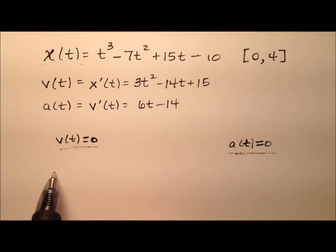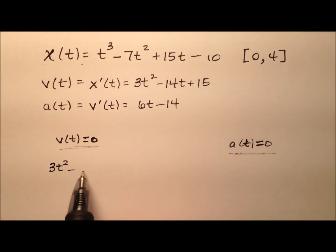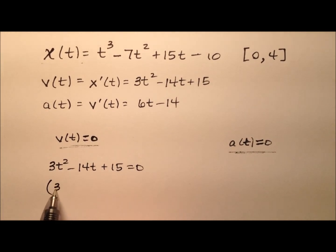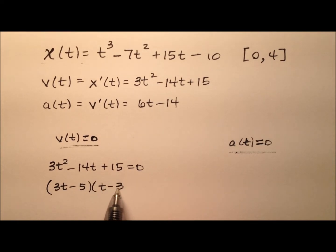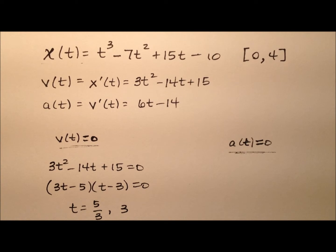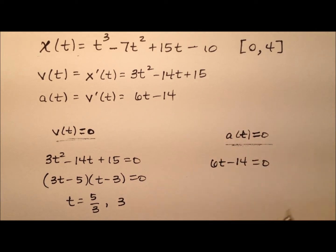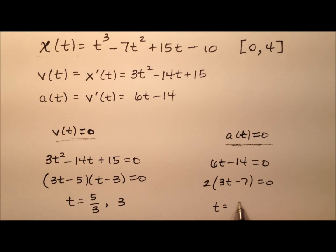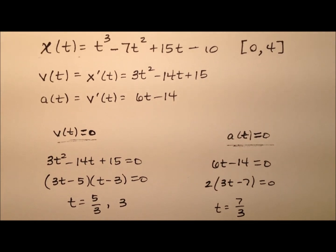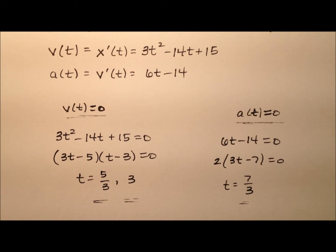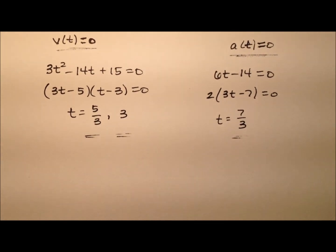Taking our velocity function 3t squared minus 14t plus 15 and setting it equal to 0, we can factor it as (3t minus 5)(t minus 3), giving us values t equals 5 thirds and t equals 3. Similarly, our acceleration function 6t minus 14 equals 0 factors to give t equals 7 thirds. So we have three critical values: 5 thirds, 7 thirds, and 3, and we'll check around those values to figure out what the particle is doing.